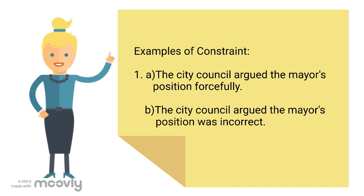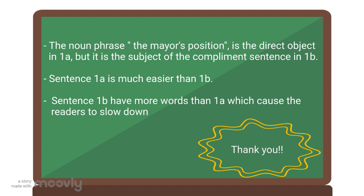To make things clearer, look at the examples given. In sentence 1a, it states: 'The city council argued the mayor's position forcefully.' And in 1b: 'The city council argued the mayor's position was incorrect.' Now, the noun phrase 'the mayor's position' is the direct object in 1a, but it is the subject of the complement sentence in 1b.